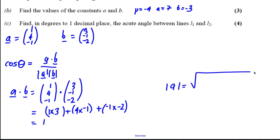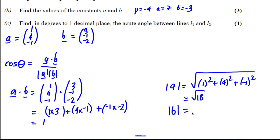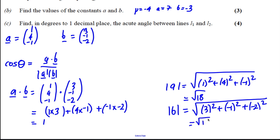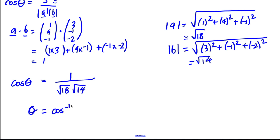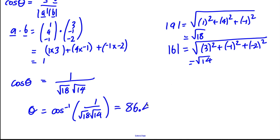The modulus of A is the square root of 1 squared plus 4 squared plus negative 1 squared, which is the square root of 18. The modulus of B is the square root of 3 squared plus negative 1 squared plus negative 2 squared, which is the square root of 14. Therefore cos theta equals 1 over root 18 times root 14, so theta equals inverse cos of 1 over root 252. Tapping that into the calculator gives 86.4 degrees, which is acute. So the angle between the lines is 86.4 degrees.